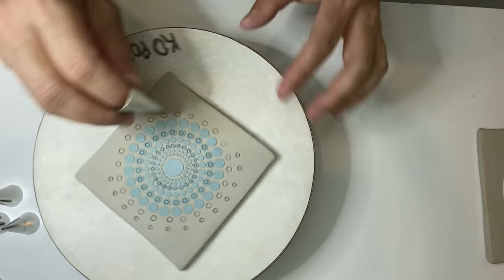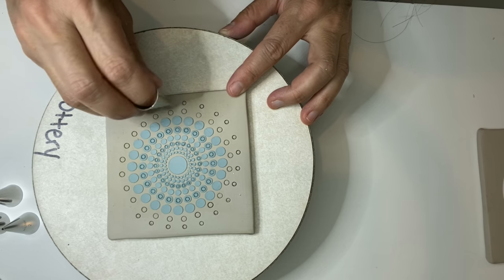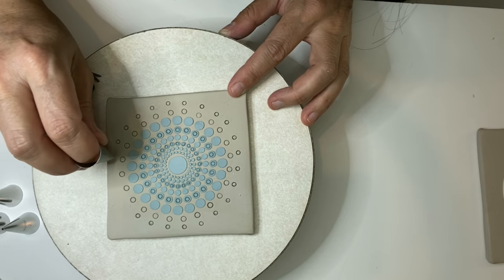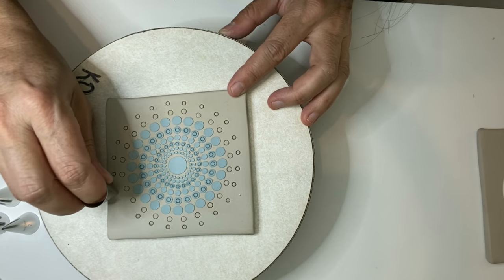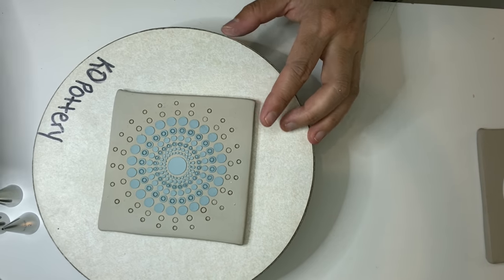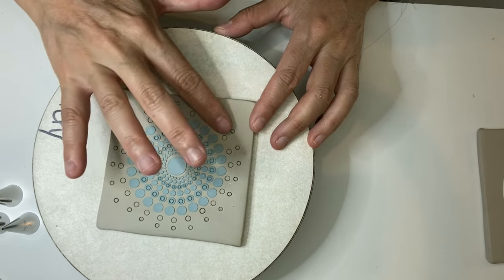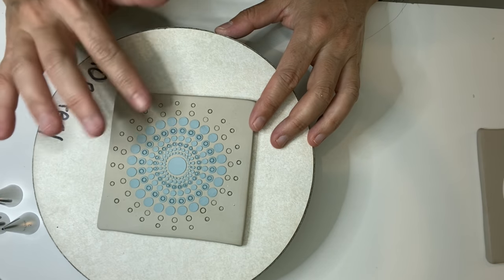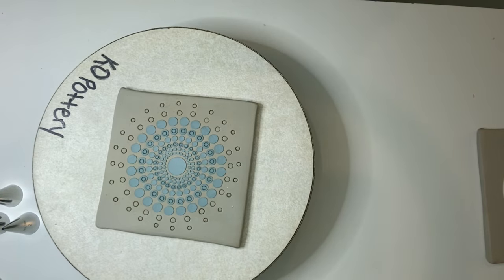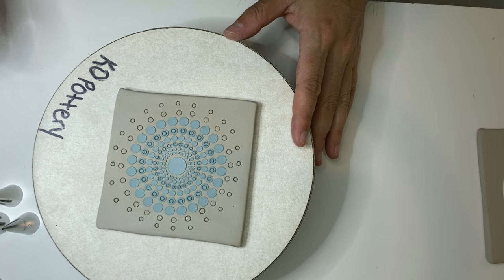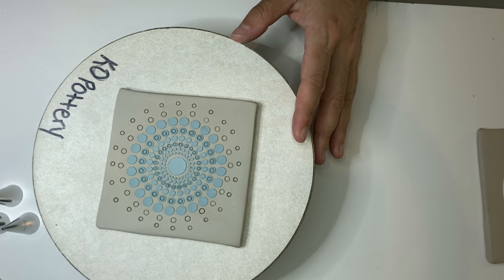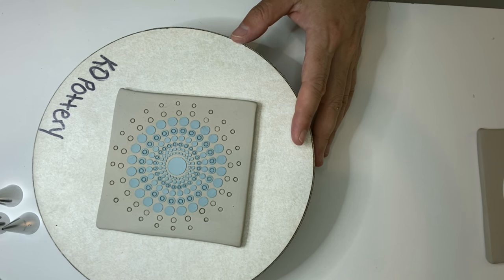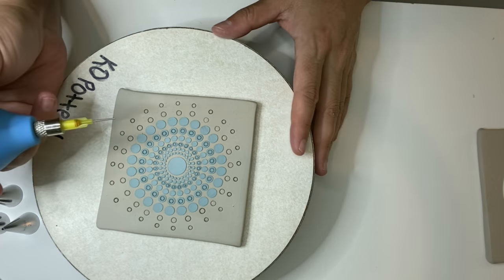So one thing about slip that I will suggest is incorporating the use of Darvan. It's a deflocculant and only like a couple of drops of Darvan to about one cup of slip will make that make your slip nice and loose where you can work with it versus using water to thin out your slip. Water when you thin out slip makes the slip once it starts drying you want to crack. So just a couple of drops of Darvan to about one cup of slip will do.